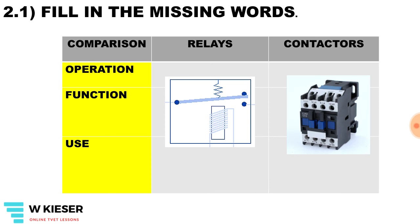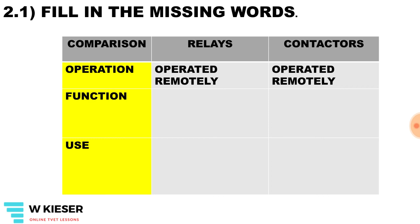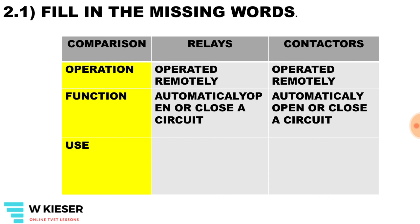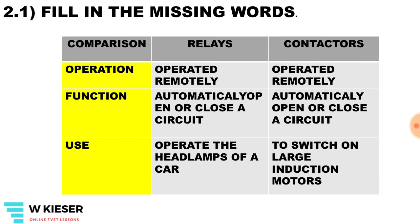Fill in the missing words in this table. We need to give the operation, function and use of relays and contactors. They are both operated remotely and both automatically opened or closed in a circuit. The use for a relay is for the headlamps of your car. For a contactor, it is mainly used to switch on AC induction motors.